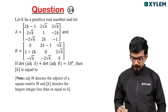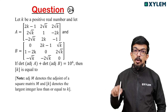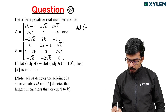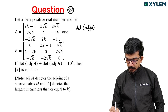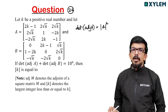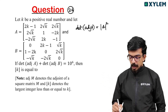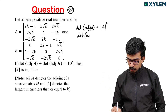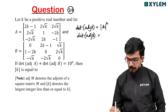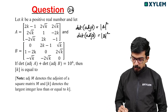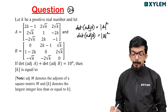We have to observe the two matrices. Determinant of adjoint of A equals determinant of A squared, because determinant of adjoint of A equals determinant of A raised to n minus 1. So determinant of adjoint of A plus determinant of adjoint of B, which is determinant of B whole square, equals 10 to the power 6.